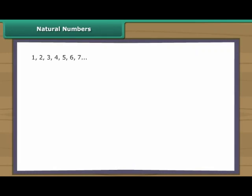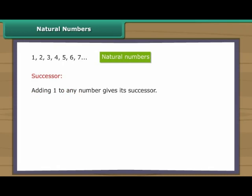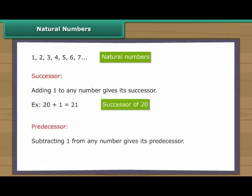Natural numbers: We use one, two, three, four to count objects. Counting numbers are also known as natural numbers. Adding one to any number gives its successor. For example, one added to twenty gives twenty-one, which is the successor of twenty. Subtracting one from any number gives its predecessor. For example, subtracting one from twenty gives nineteen, which is the predecessor of twenty.